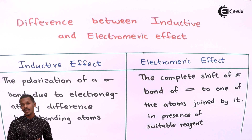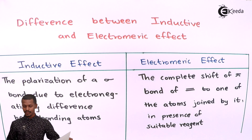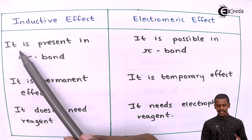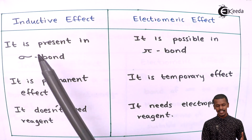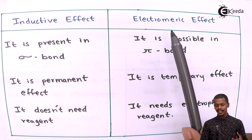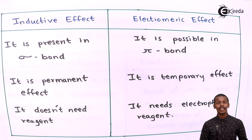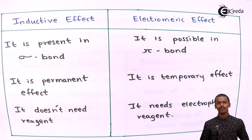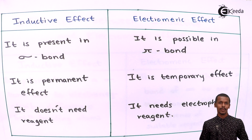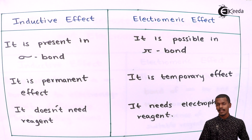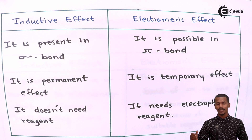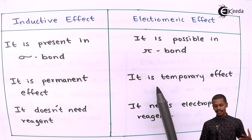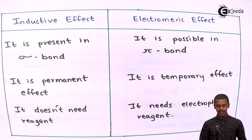The major difference between the two: inductive effect takes place in a sigma bond, while electromeric effect takes place in molecules that have pi bonds. Inductive effect is observed in sigma bonds, whereas electromeric effect is possible only in molecules that can form multiple bonds — like alkenes or carbonyl compounds — which have the capacity to form multiple bonds.